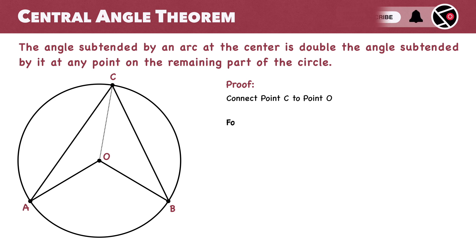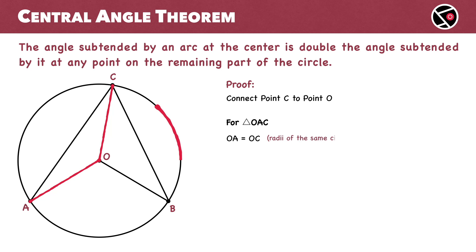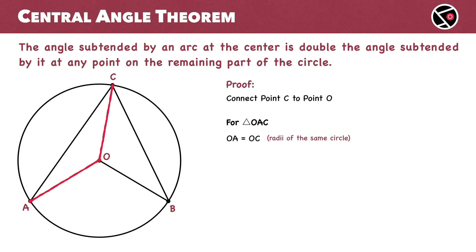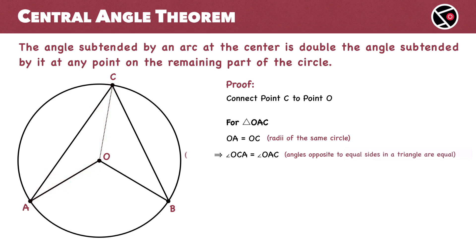Now, for triangle OAC, OA equals OC — both are radii of the same circle. Angles opposite to equal sides in a triangle are equal, so angle OCA is equal to angle OAC. This is equation number 1.